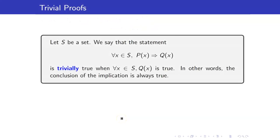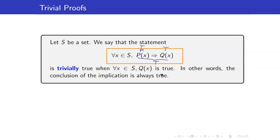There are two situations where an implication is true for trivial reasons. The first: let S be a set. We say the statement 'for all x in S, P(x) implies Q(x)' is trivially true when for all x in S, Q(x) is true — in other words, the conclusion of the implication is always true. Since the conclusion is always true regardless of whether P(x) is true or false, the entire implication is automatically true, so we say the statement is trivially true.